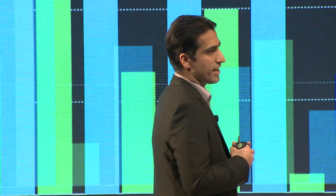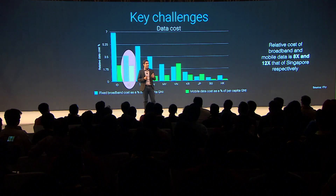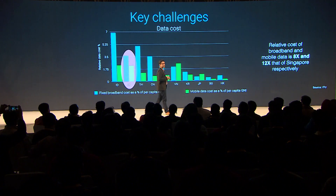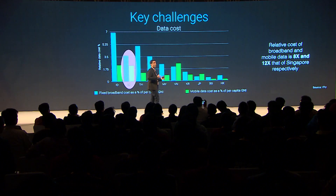The third challenge we need to take into account is about affordability of data. The relative cost of data, as measured by cost as a percentage of per capita national income in India, is high compared to some other markets in the region. Even a market like Singapore, for example, is eight times cheaper when you look at relative mobile data cost, and 12 times cheaper when it comes to mobile broadband. So clearly, there is work to be done to make data more affordable, and at the same time, work to be done in creating content that works effectively despite all these challenges.